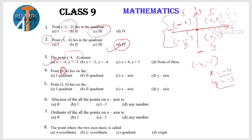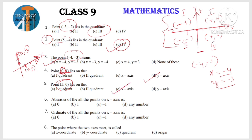If the point is on the x-axis, the y-coordinate becomes zero. If a point is on the y-axis, the x-coordinate becomes zero. Based on this: (0, 4) — x is 0, so the point lies on the y-axis. And (5, 0) — y is 0, so the point lies on the x-axis. Remember: x zero means y-axis, y zero means x-axis.